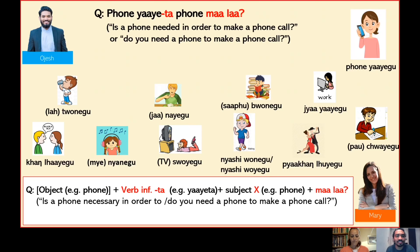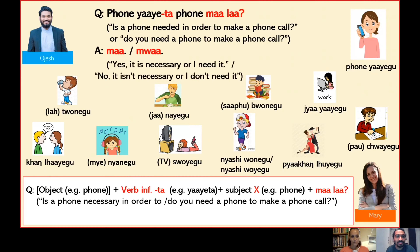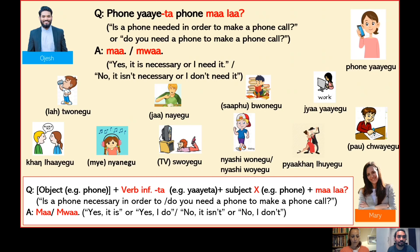The answer in this case can be ma, meaning 'yes it is needed' or 'I need it'. But if the answer is negative, you can simply say mua. So Ojes, in this structure the verb infinitive followed by the suffix ta means 'in order to do'. That's correct. For example, neita means 'in order to eat', tonita means 'in order to drink' and so on. But let's practice looking at the pictures and it will become easier.